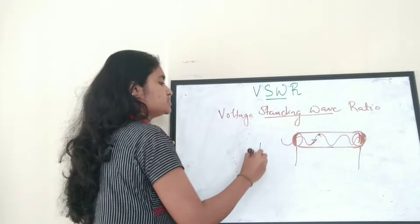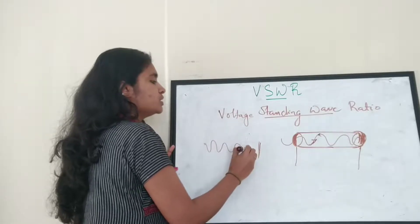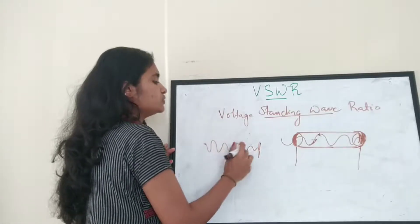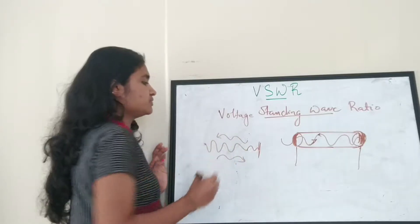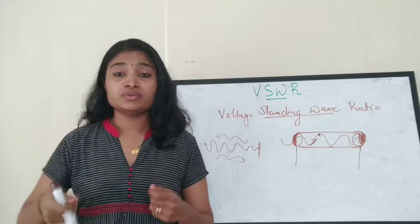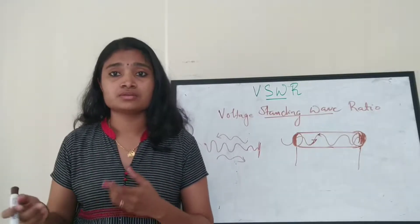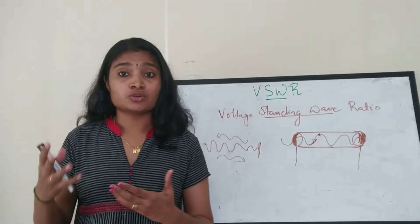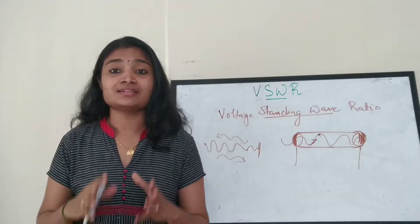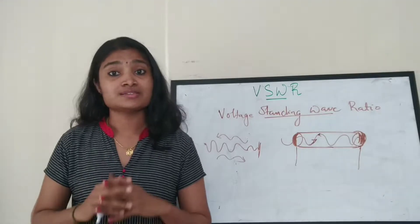Now let's consider there is a wall and a rope is tied to it, and we are going to make wave motions with the rope. The wave will go in one direction and also back in the other direction. If the motion is really fast, we cannot identify whether the rope is moving forward or coming back. In such a case we consider that as a standing wave, or a still rope.